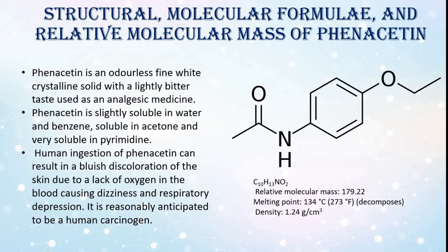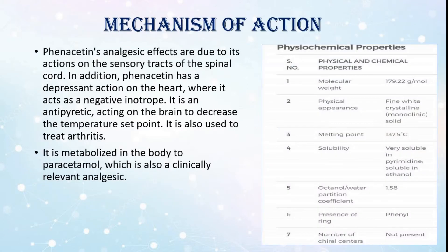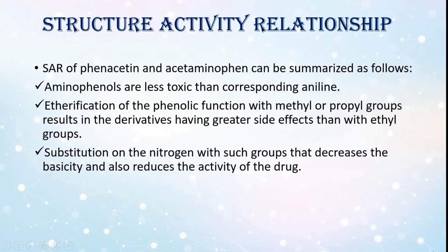Ingestion can cause dizziness and respiratory depression. It is reasonably anticipated to be a human carcinogen. Mechanism of action: Phenacetin's analgesic effects are due to its actions on the sensory tracks of the spinal cord. In addition, phenacetin has a depressant action on the heart where it acts as a negative inotrope. It is an antipyretic, acting on the brain to decrease the temperature set point. It is also used to treat arthritis, and is metabolized in the body to paracetamol.